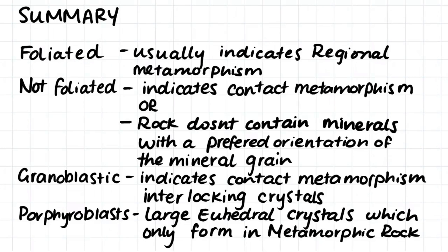So now we know all the terms we use to describe metamorphic rock. To summarize: foliated rock usually indicates that regional metamorphism has occurred. Non-foliated rock indicates that the rock has either undergone contact metamorphism, or doesn't contain minerals with a preferred orientation of mineral grain. Granoblastic rock has interlocking crystals and usually indicates contact metamorphism. Porphyroblasts are large euhedral crystals which only form in metamorphic rock, and therefore indicate that metamorphism has occurred.